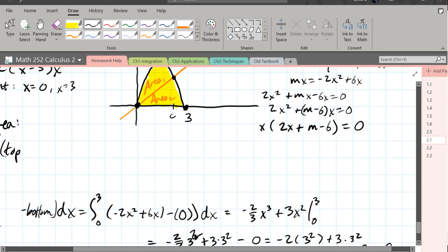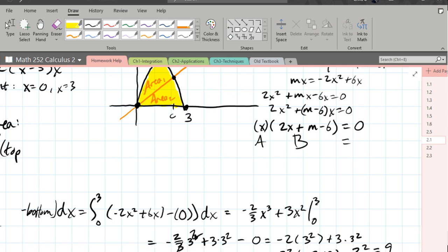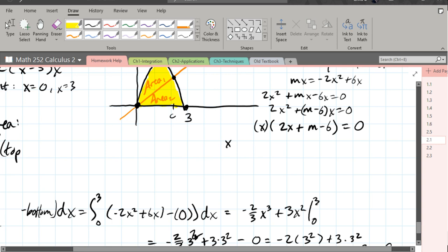Here we can use the zero product property because we're multiplying two terms. A times b equals 0. So a equals 0 or b equals 0. So a equals 0 means x equals 0, and that was the one that you saw already on the graph. The other one is 2x plus m minus 6 equals 0. And we want to solve. You have to remember what we're solving for. We're solving for x, not m. 2x equals 6 minus m, so divide by 2.